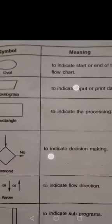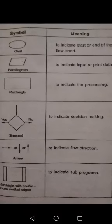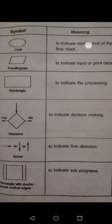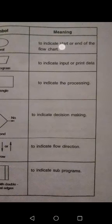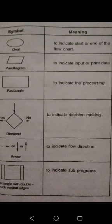For each and every symbol we are having a particular operation. The oval symbol shows the start or end of the flowchart.